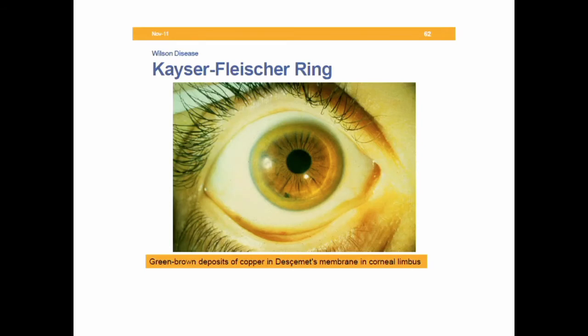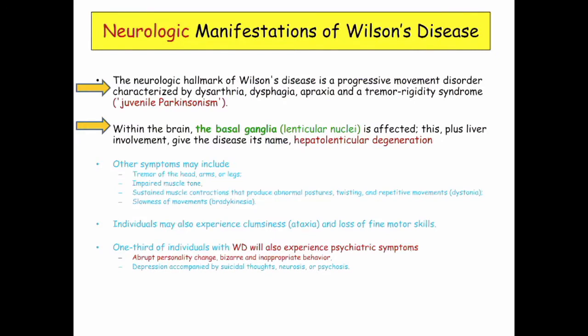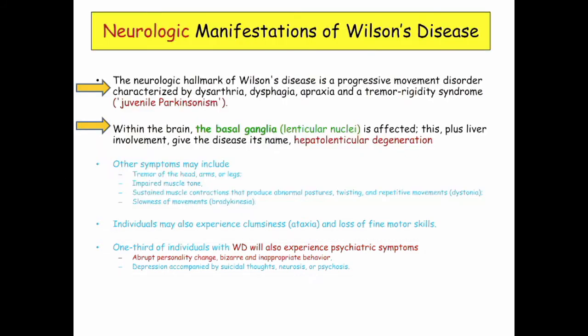Neuromanifestations are the money here. Kaiser-Fleischer rings on slit lamp. Neurological manifestations include dysarthria, aphasia, apraxia — basically anything that sounds like a movement disorder in a patient who has abnormal liver chemistries, especially if they're young, is Wilson's. A third of patients have psychiatric symptoms: bizarre behaviors, personality changes. They're going to give you a patient acting strangely with a little line about abnormal liver function — that's Wilson's derivative.